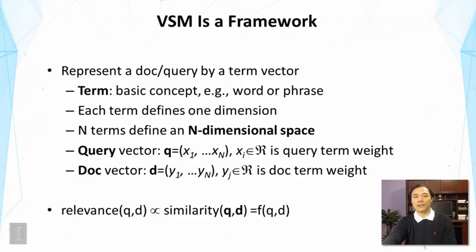A query vector would consist of a number of elements corresponding to the weights on different terms. Each document vector is also similar. It has a number of elements, and each value of each element is indicating the weight of the corresponding term. Here you can see we assume there are n dimensions, therefore there are n elements, each corresponding to the weight on a particular term.